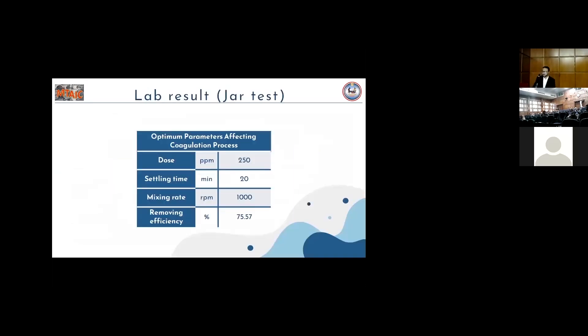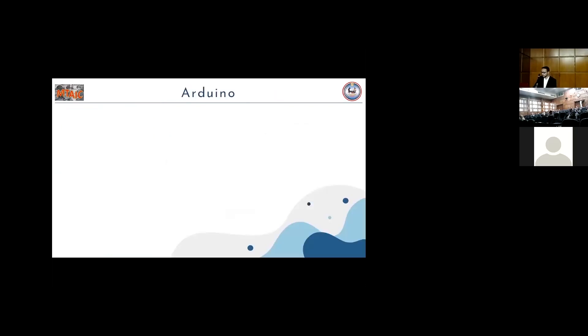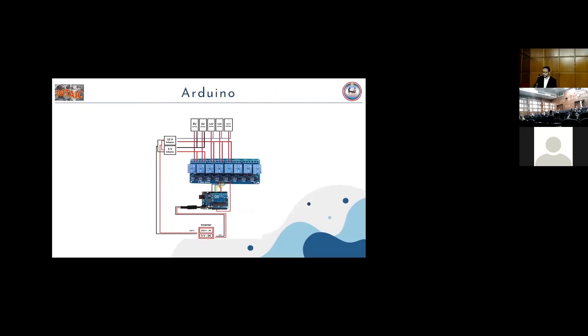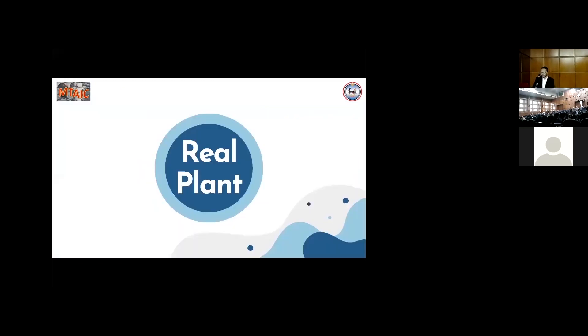The lab results for the optimum conditions in pilot plant for the coagulation process is found to be the dose is 250 ppm alum, and settling time 20 minutes, mixing rate 1000 rpm, with efficiency of turbidity removal 75 percent. The coagulation and flocculation tank was designed to achieve the highest capacity for our pilot plant, to make up for the long-time settling, while maintaining the pilot plant size as small as possible. The Arduino is used to control and operate the pilot plant. And according to this analysis, the real plant will be designed to treat underground water to be used for irrigation.